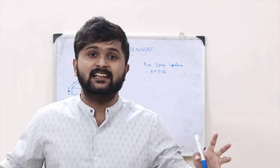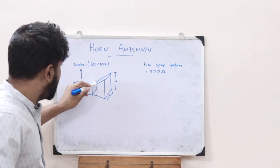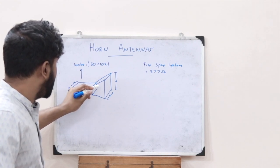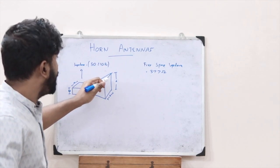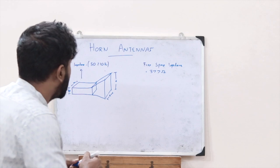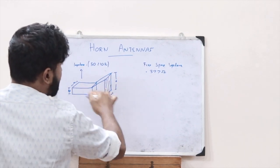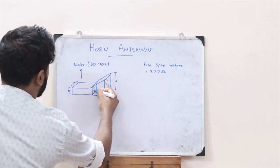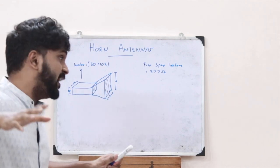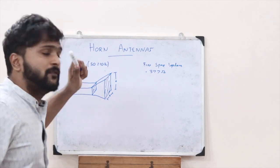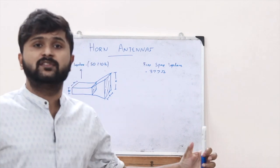Thus it results in the radiation of signals. At the tip of this waveguide the effective area of cross section is comparatively less, given as A into B. But at the flaring element the area of cross section is comparatively larger. That is how the flaring element results in matching the impedance between the waveguide value and free space impedance — that is how impedance matching is obtained.